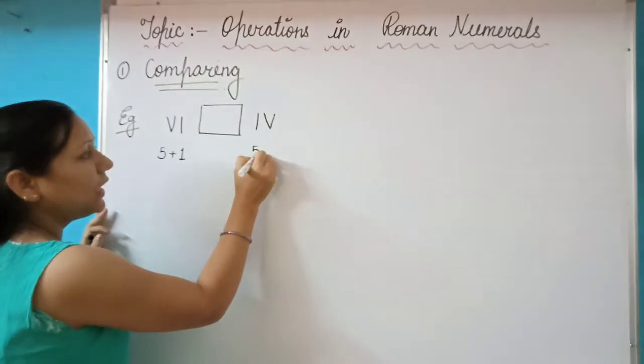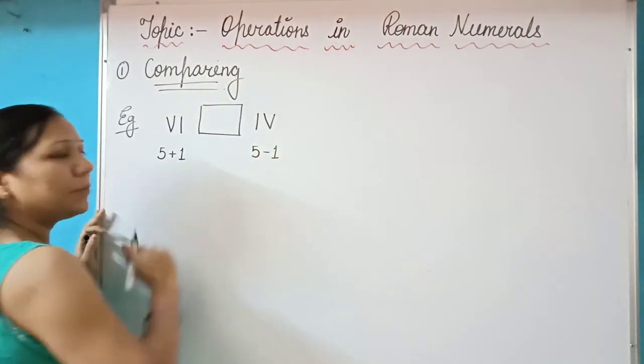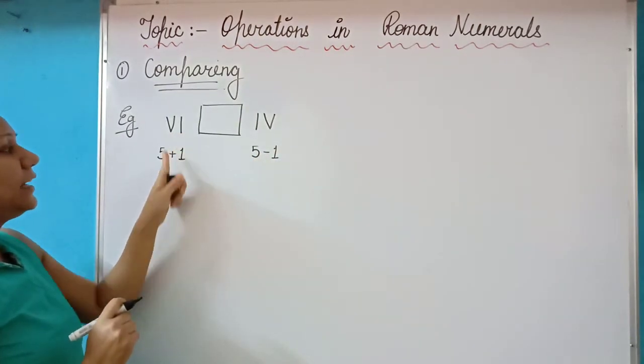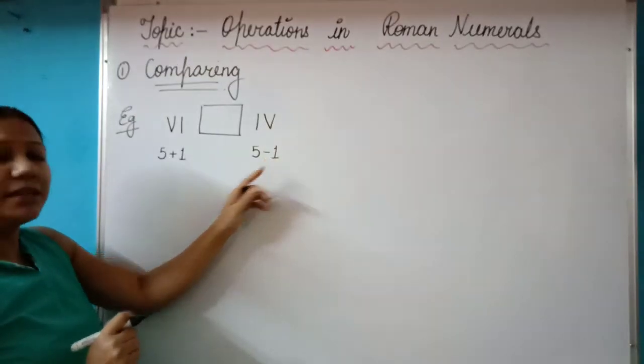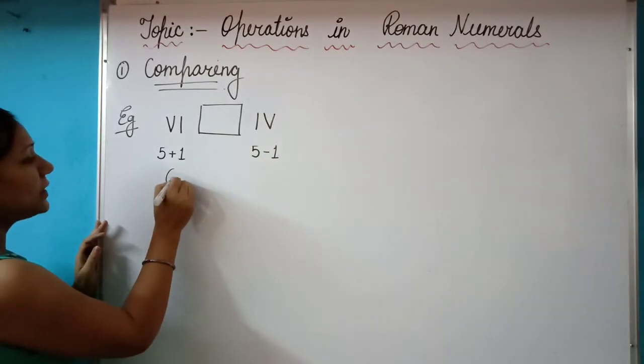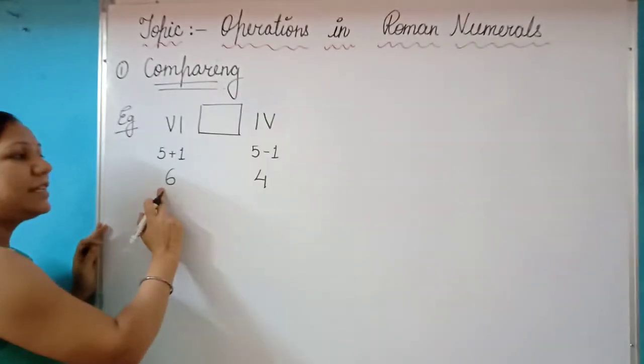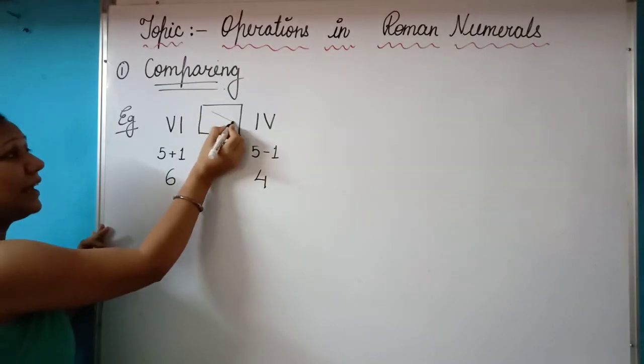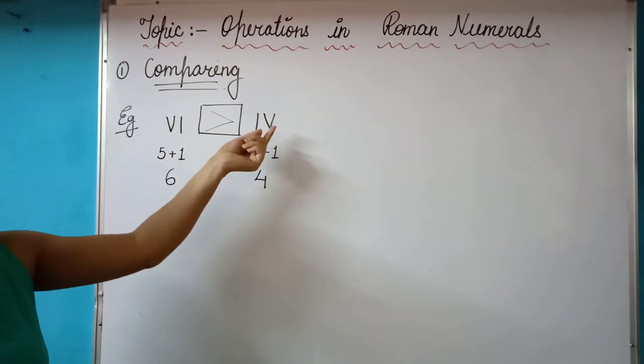On this side, it will be V representing 5 and then minus 1 because according to rule, if smaller value is on the right side, it will be added. If smaller value is on the left side, then it will be subtracted. Our digit here is 6 and the second value is 4. You can easily identify which value is greater. Yes, 6 is greater than 4. That means VI is greater than IV.